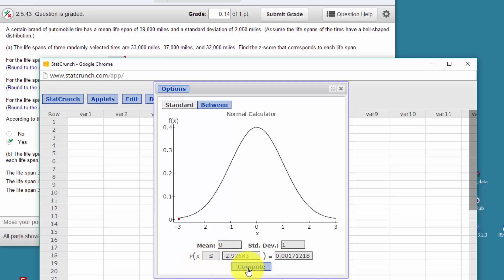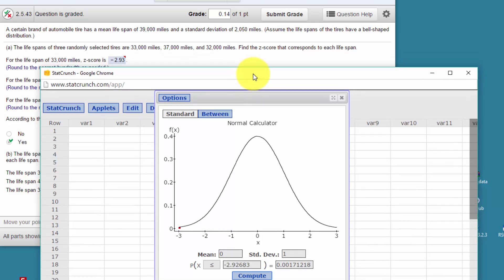So I've got 'less than or equal.' I click on Compute, and you can see a z-score of -2.92683, rounding that off to -2.93. I'll pull this down there, and yes, that's the value for the first z-score.